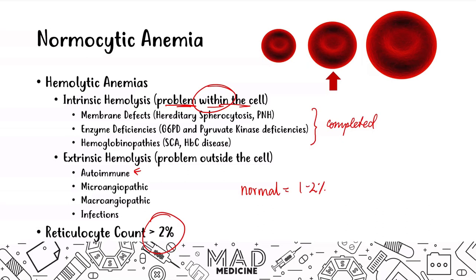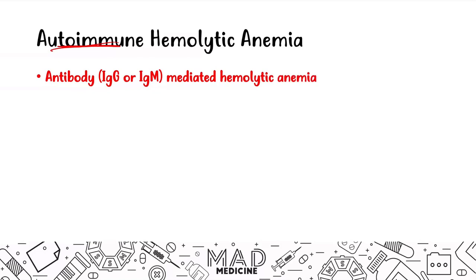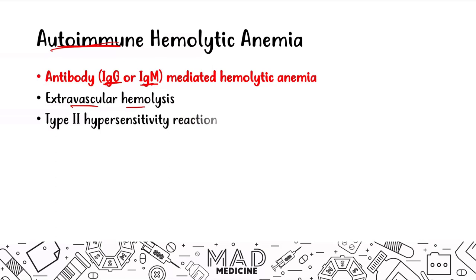Autoimmune hemolytic anemias are autoimmune-mediated, meaning you have antibody-mediated hemolysis as the main pathogenesis. This can be either IgG or IgM, which is important because the predominant antibody determines the type of AIHA. All of this happens extravascularly — this is extravascular hemolysis and a type 2 cytotoxic hypersensitivity. The IgG and IgM coat the red blood cells, and macrophages then engulf and destroy them.